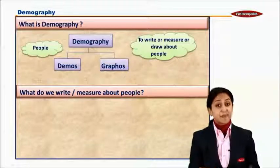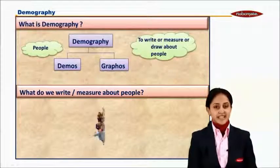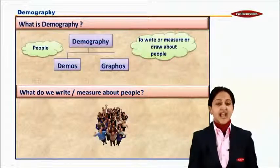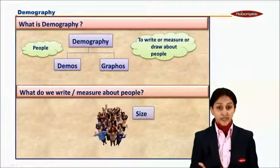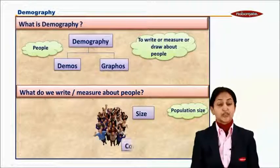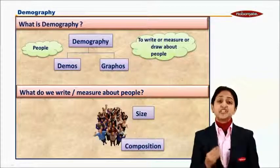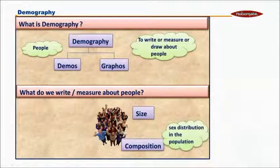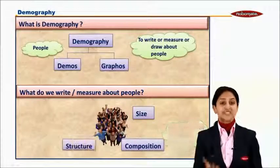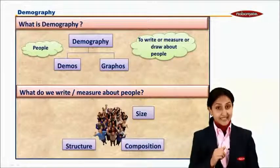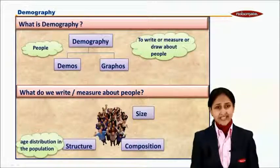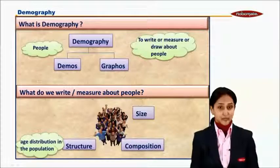What is that something which we are measuring about people in demography? When I have a group of individuals, I would like to know the size of that group, that is the size of my population. Next, once I know the size, I would also be interested to know the composition of my group — the sex distribution or the male-female ratio in my population. Knowing the size and composition, I would like to know the structure of my population, that is the age-wise distribution — how many people belong to school-going kids, how many belong to the adult group, how many belong to the senior citizen group, and so on.